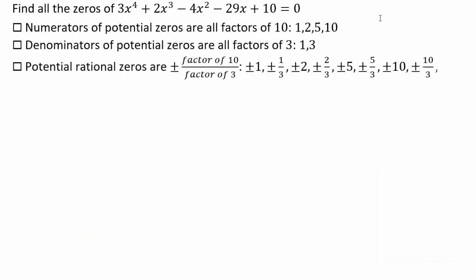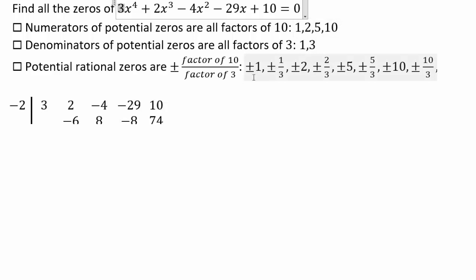For the next problem, the numerator is going to be all factors of 10: 1, 2, 5, and 10. The denominator is all factors of 3: 1 and 3. So we have plus or minus 1, 1 third, 2, 2 thirds, 5, 5 thirds, 10, and 10 thirds as all our possible potential rational zeros.